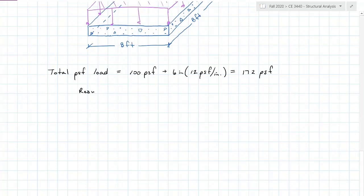So the resultant force is going to equal that load PSF over the area, eight feet by eight feet, which equals 11,008 pounds of force or 11 kilopounds for resultant force.